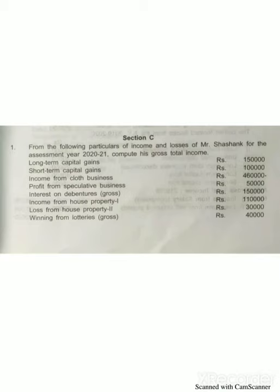The question is: from the following information we have to compute his gross total income. The given information includes: long-term capital gain 1,50,000; short-term capital gain 1,00,000; income from cloth business 4,60,000; profit from speculative business 50,000; interest on debenture (gross amount) 1,50,000; income from house property 1 - 1,10,000; loss from house property 2 - 30,000.